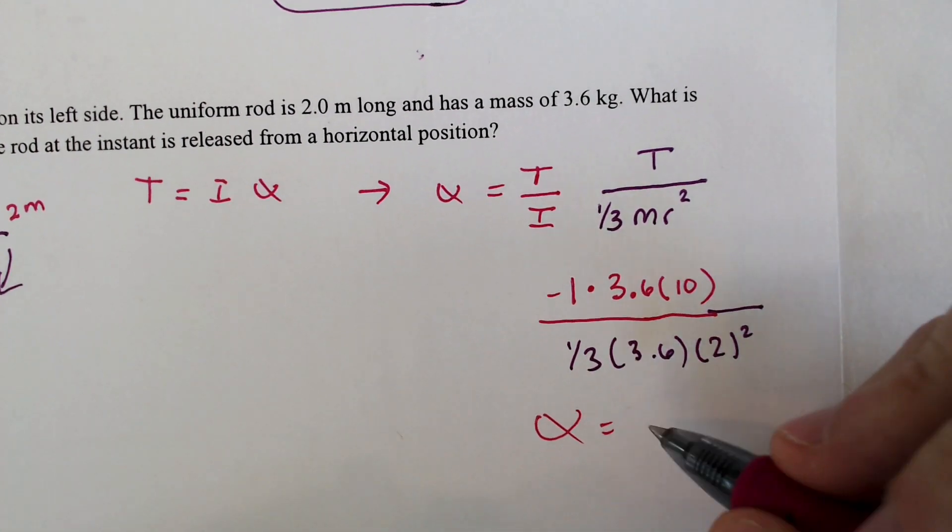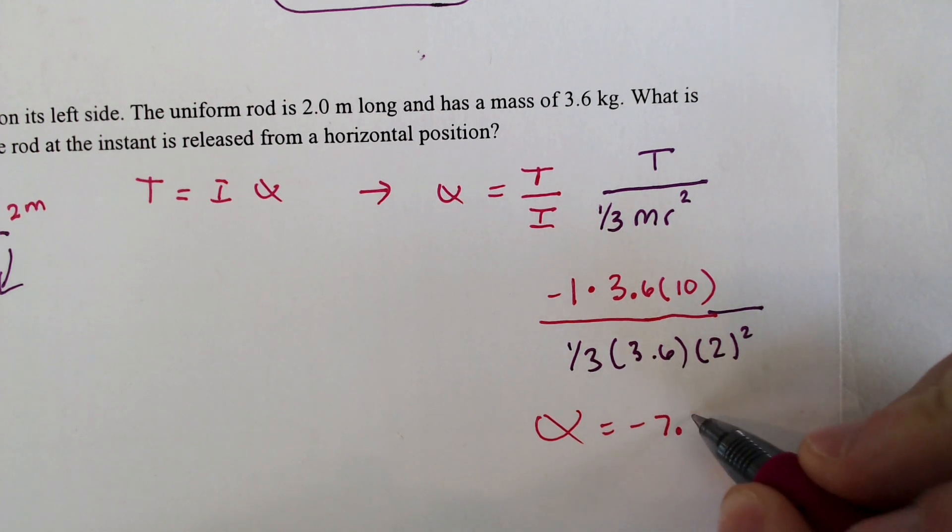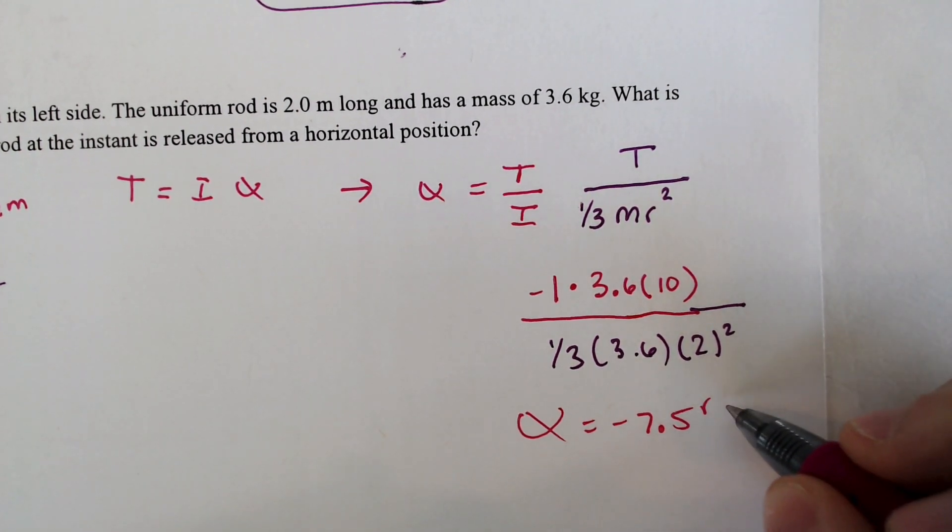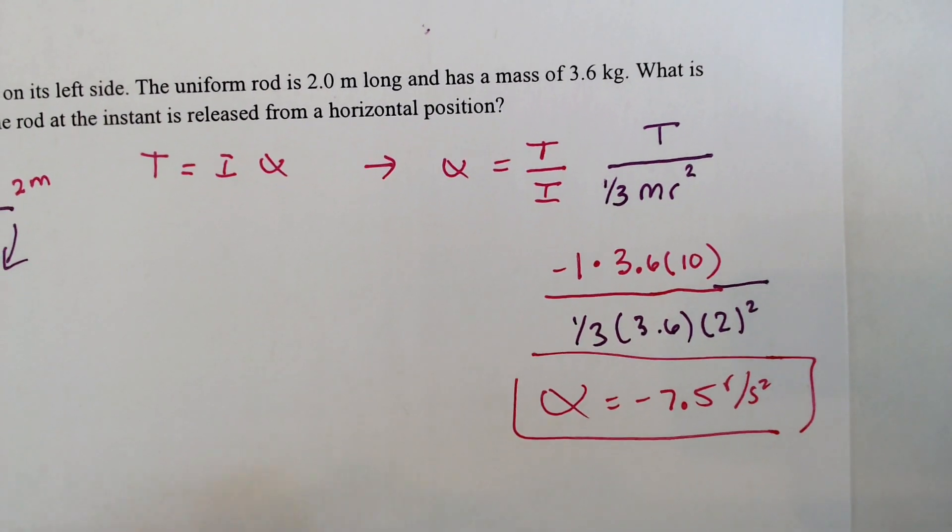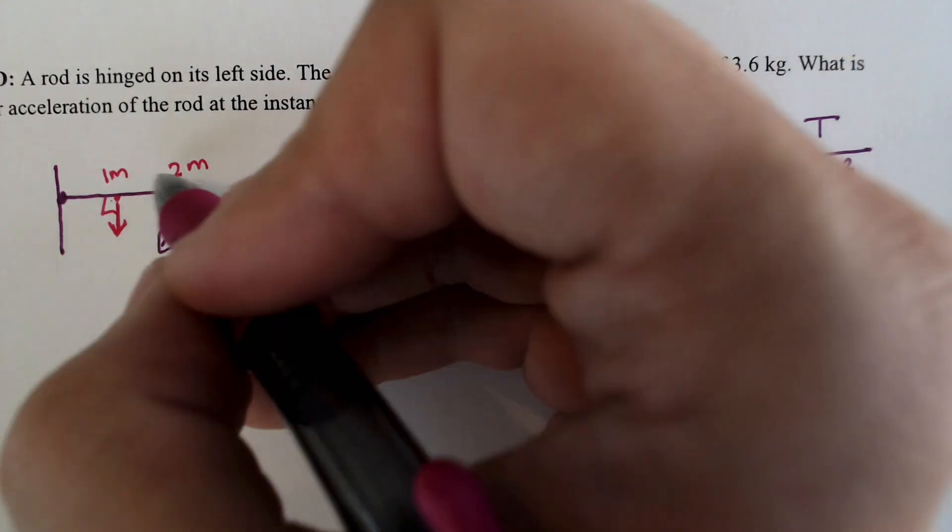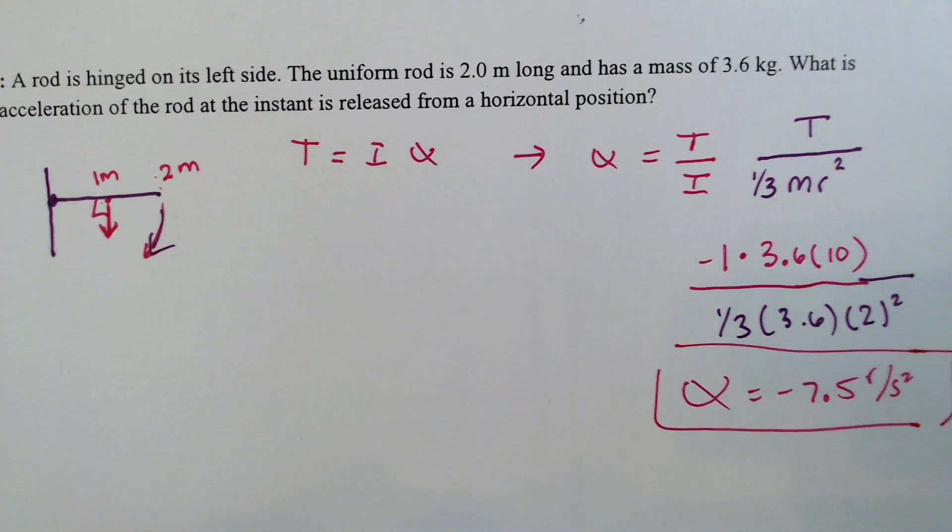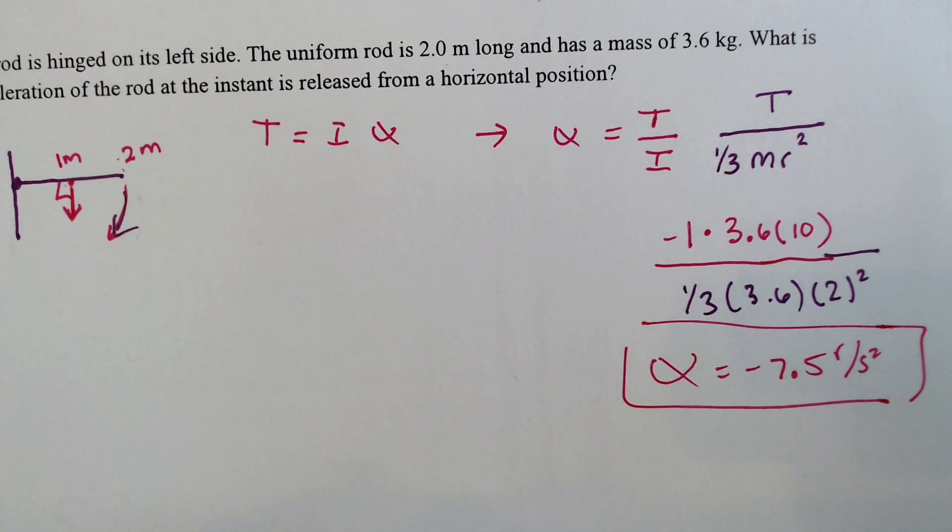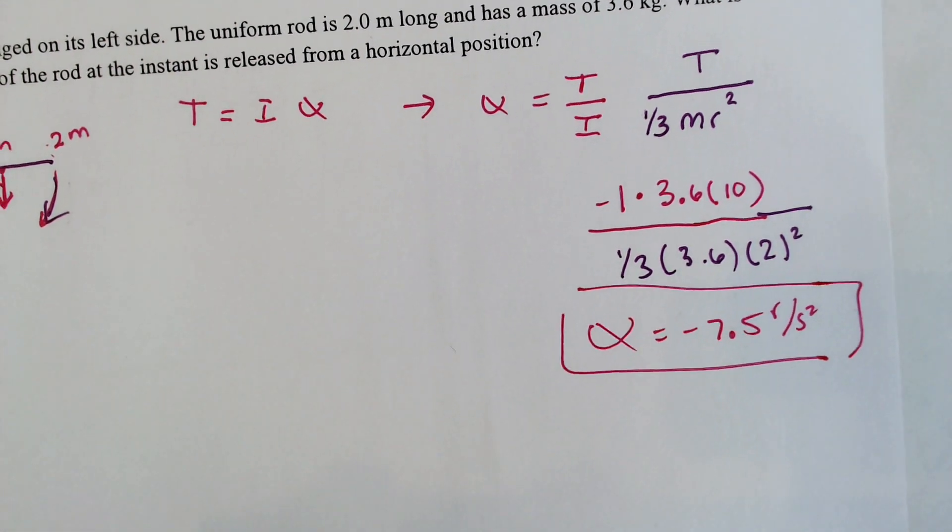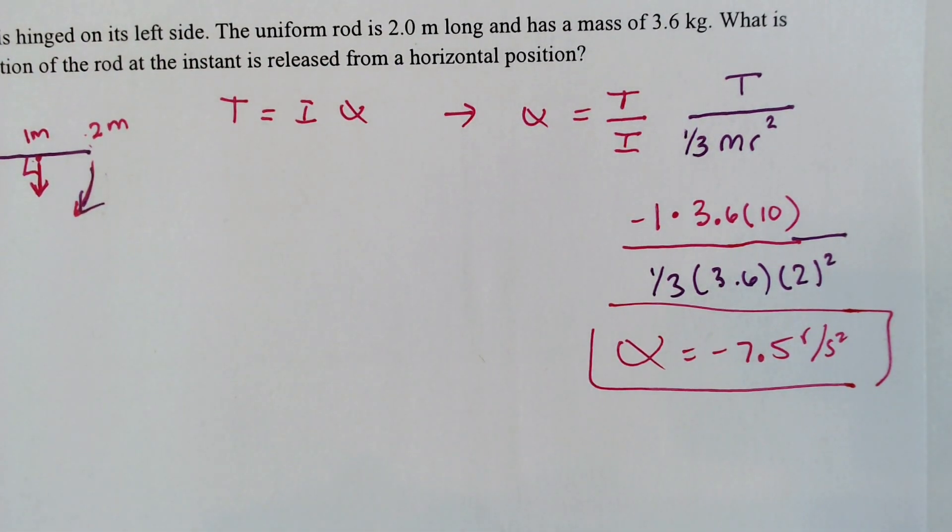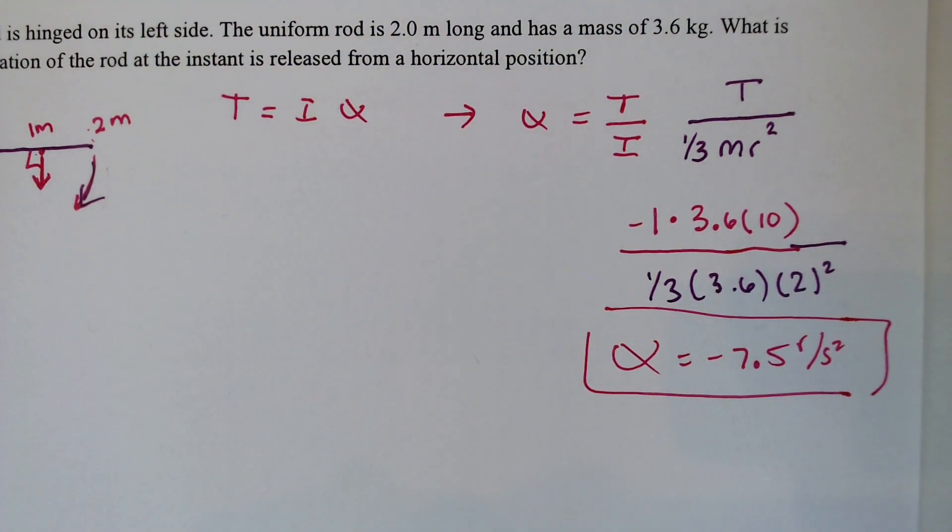You would get an angular acceleration reading of negative 7.5 radians per second squared. Ask yourself why is it negative? Well, it is going down, right? And down is considered clockwise in this problem and clockwise is negative. So it is going down at negative 7.5 radians per second squared. And that ladies and gentlemen is going to do it for this one. I will see y'all in the next one. Stay positive my friends.